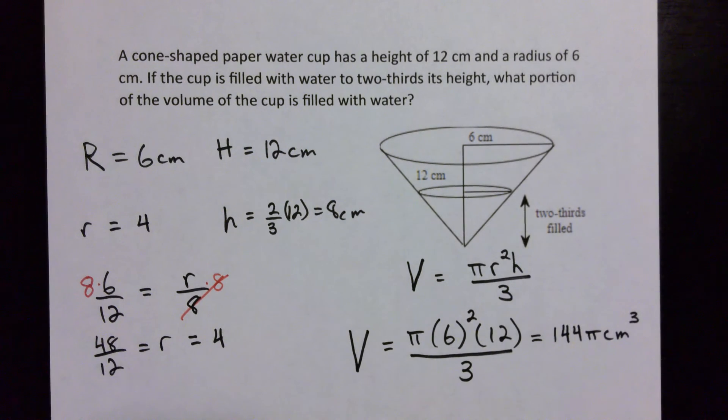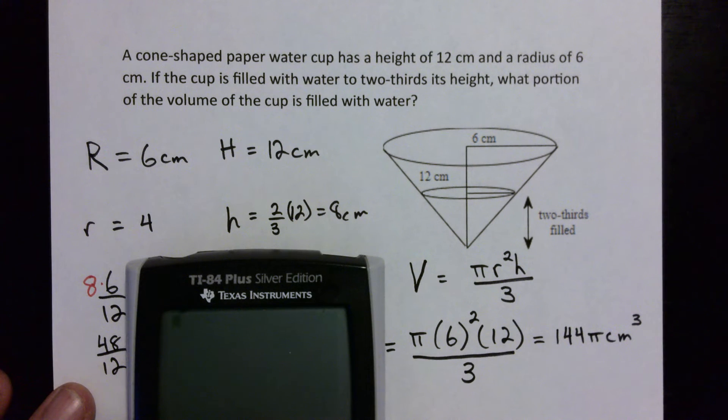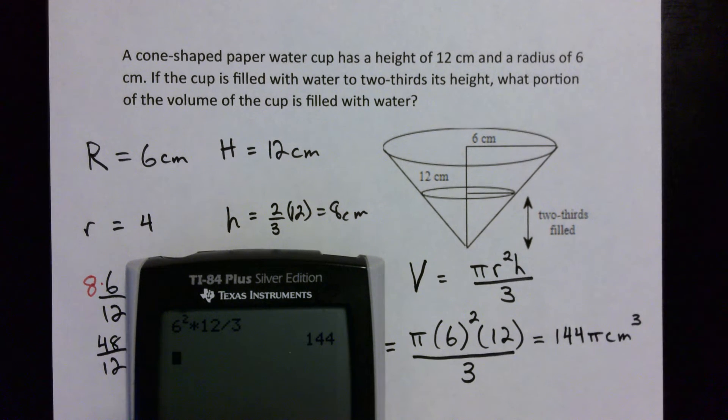Okay, and let me show you real quick to confirm that in the calculator so you can see it. So 6 squared times 12 divided by 3, notice I didn't put the π in here.